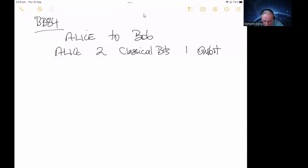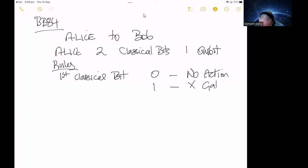So look, there can only be... Oh, let me give you the rules first. The rules on the first classical bit. If she gets a zero, there's no action. And if she gets a one, then she applies an X gate to that qubit.